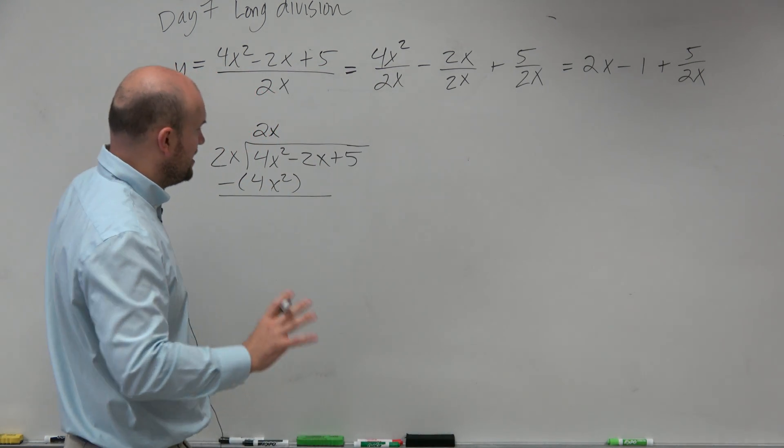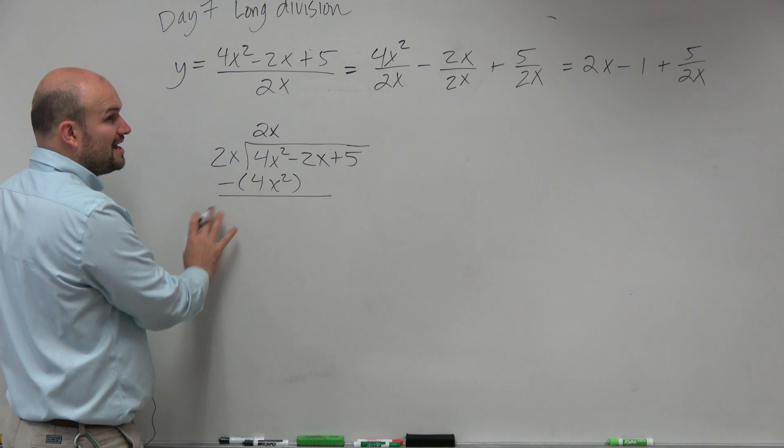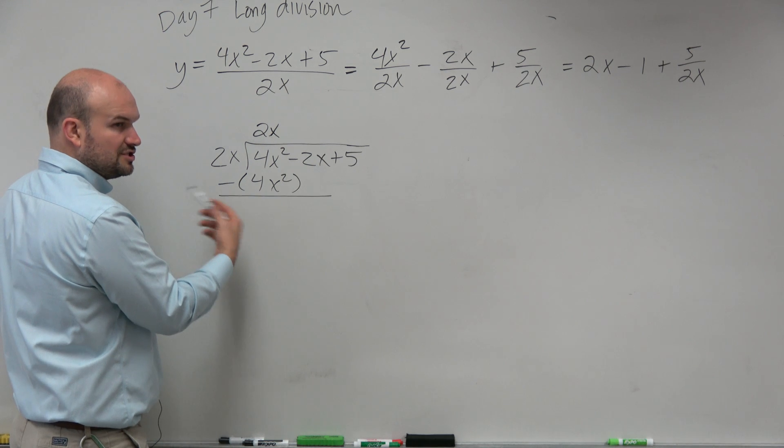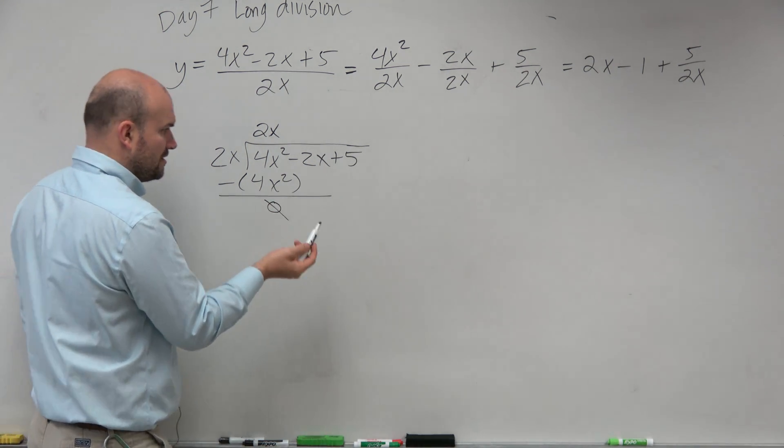of missing a negative. It happens every single year. It happens every single time. So even though this is a monomial, I just make sure I use parentheses. 4x squared minus 4x squared is just 0x squared, which is just 0, right?